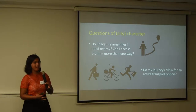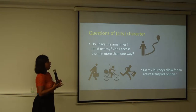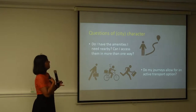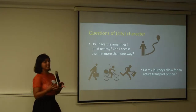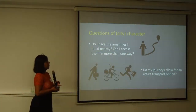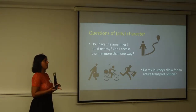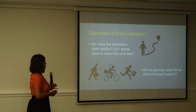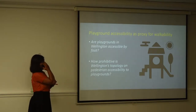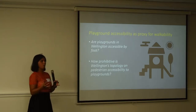So what kind of questions can you actually ask of spatial data? Some of the things I've been interested in are around what is my neighborhood — does my locality have amenities I need nearby, and can I actually access them in more than one way, or do I just have to drive to get there? And similarly, do my journeys allow for active transport — can I walk, run, or bike? These are all very important questions for us as citizens of a city. One of the examples I've been using is accessibility to council playgrounds as a proxy for how walkable a city is.